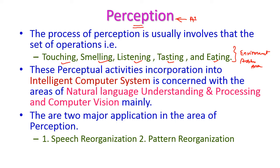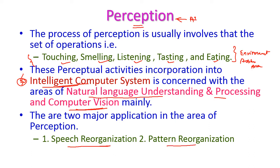By using these operations we try to make the computer more intelligent. The areas that come under perception are natural language understanding and processing, and computer vision. The major applications under this area are speech recognition and pattern recognition, which fall under natural language processing and big data or data science.